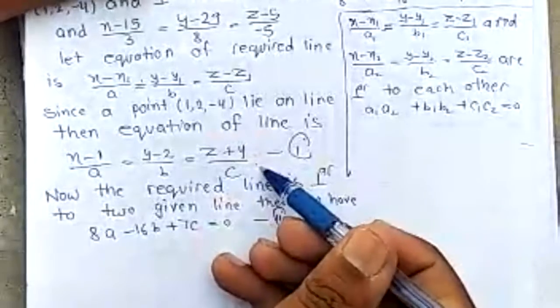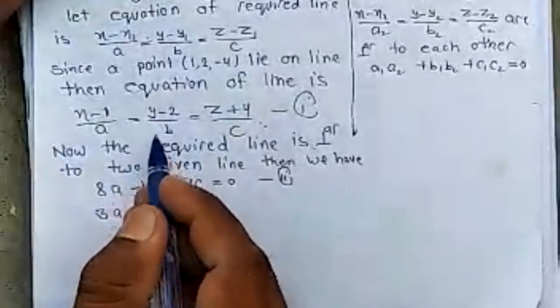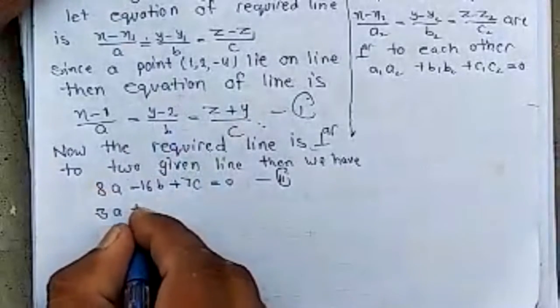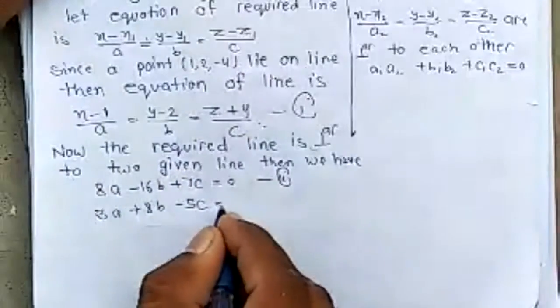Since line 1 is also perpendicular to this line, we have 3A plus 8B minus 5C equals 0.